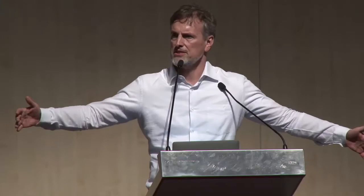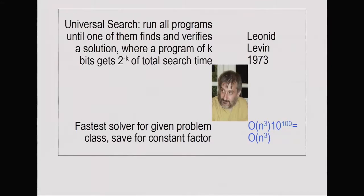This type of optimality is not quite as pleasing as what Markus Hutter achieved. Suppose solving a problem of size n is O(n^3) — Levin search will also solve it in O(n^3) steps. However, the multiplicative constant may be rather large, like 10^100, and not everybody is going to use it. What Markus did was bring that down to an additive constant.